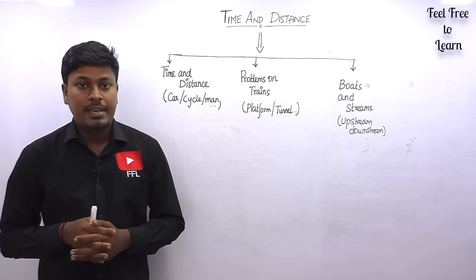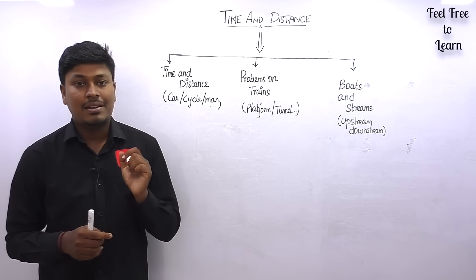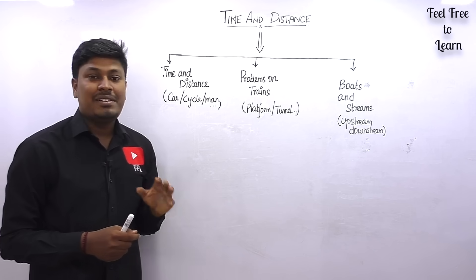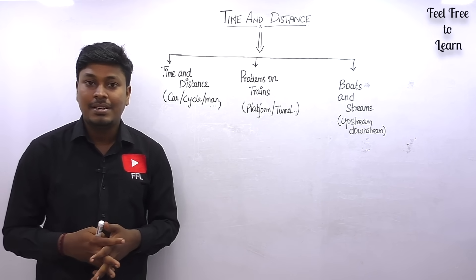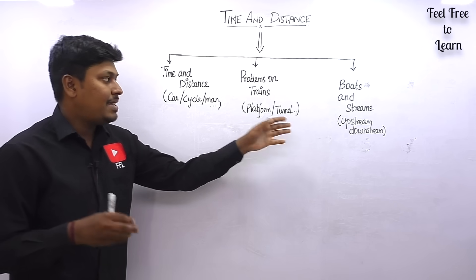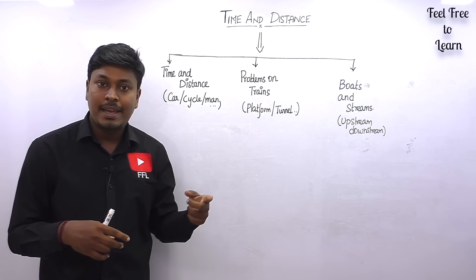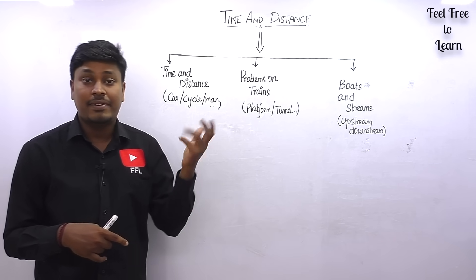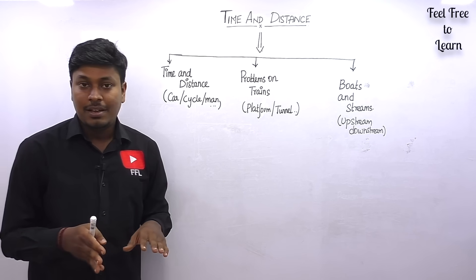Thanks for being here on my YouTube channel. In this video we are going to learn an introduction about the topic time and distance. Time and distance is one of the most important topics in aptitude, and it is most important for all competitive exams. You can expect at least one mark, and for SBI exams or CAT level exams, you can see five marks in data interpretation.